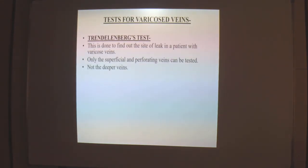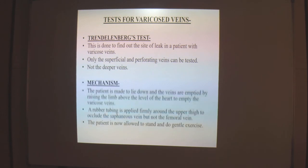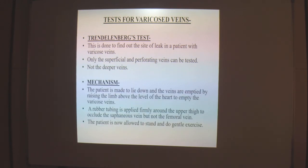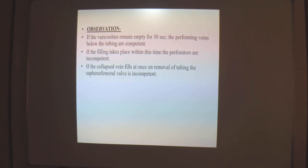The Trendelenburg test is used to diagnose varicose veins — specifically to find leaks, testing only superficial and perforating veins, not deep veins. The patient lies down, the limb is raised above heart level to empty the varicose veins, and a rubber tubing is applied firmly around the upper thigh to occlude the saphenous vein but not the femoral vein. The patient then stands and does gentle exercise. If varicose veins remain empty for 30 seconds, the perforating veins below the tubing are competent. If filling occurs within 30 seconds, the perforators are incompetent. If the collapsed vein fills at once on removal of the tubing, the saphenous-femoral valve is incompetent.